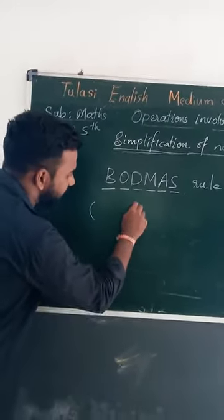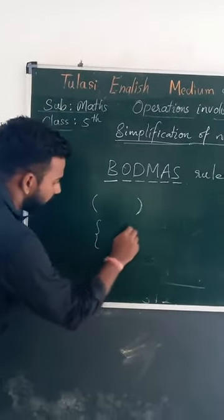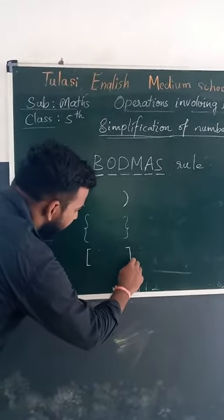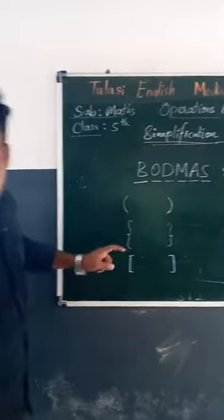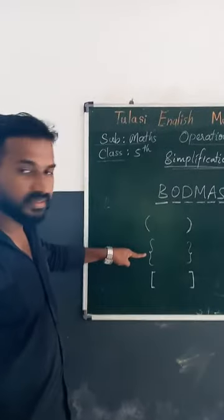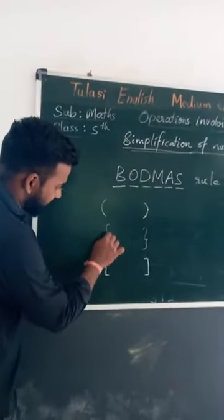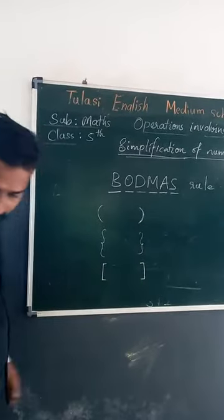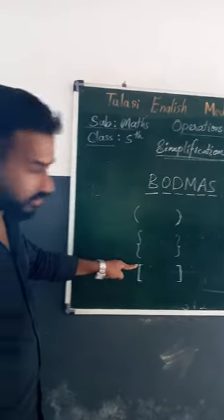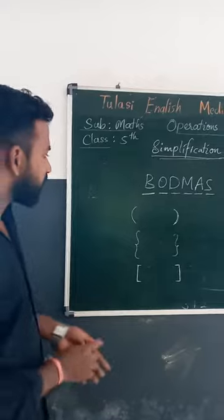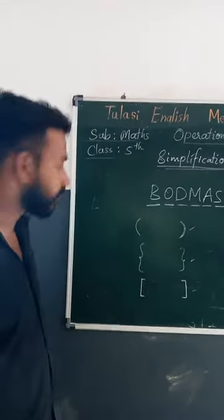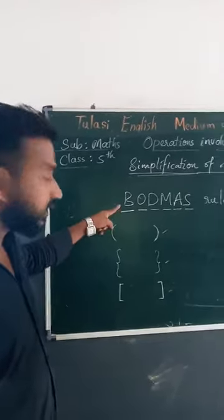In brackets there are many types: simple brackets, curly brackets, and square brackets. Simple brackets are also called round brackets. Curly brackets — it looks curly. Square brackets. So first we have to remove simple brackets, next curly brackets, next square brackets. There are more than one brackets.